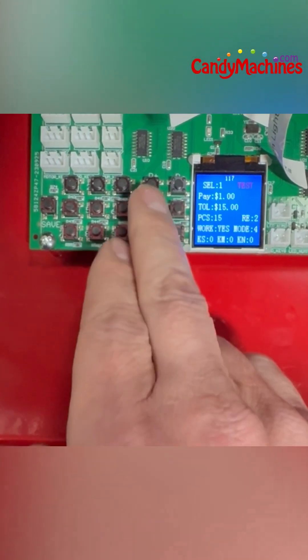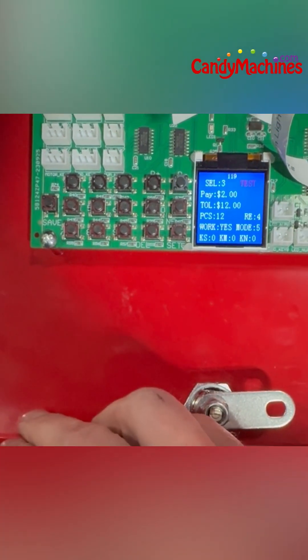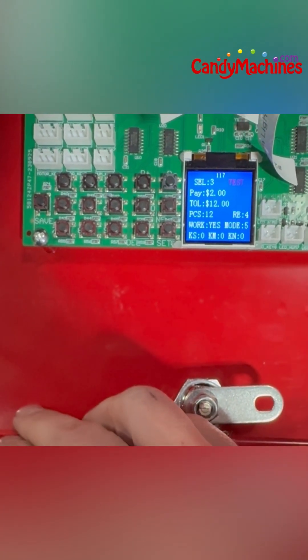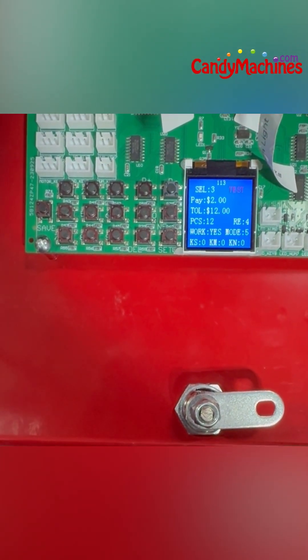But basically, we'll go ahead and work on the capsule, which is selection number three. So you've got the first two, one and two are the stickers, and number three is your capsule.